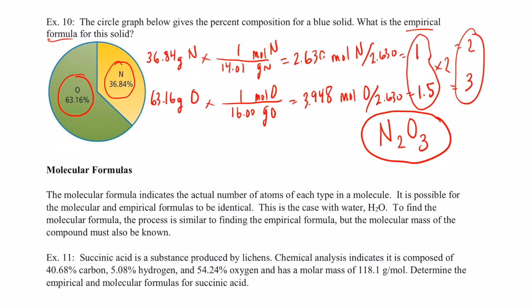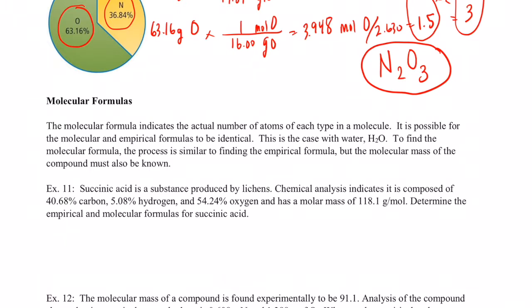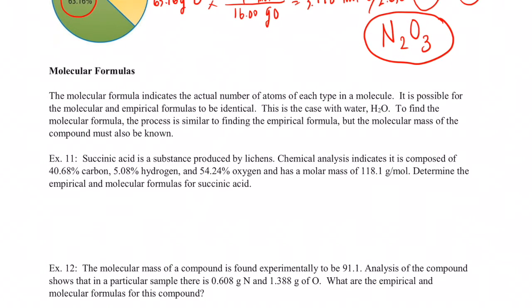Okay, now you guys should be pretty solid on empirical formulas. You'll get a chance to do a bunch of those in class — in fact, you found the empirical formula of magnesium oxide in the lab not too long ago. Well, let's move on to molecular formulas. The molecular formula is the actual number of atoms of each type in a molecule.